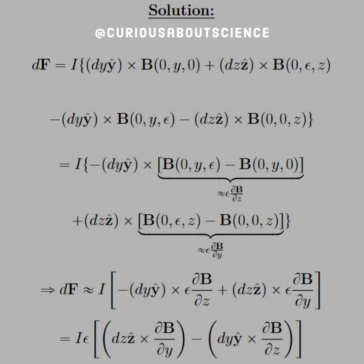So when we put them together and substitute it in, we get dF is approximately I in the brackets, negative dy ŷ cross the expansion term. And similarly, add that together with the dz ẑ term crossed with their expansion term. You can kind of see here now that we're looking more like a cross product.